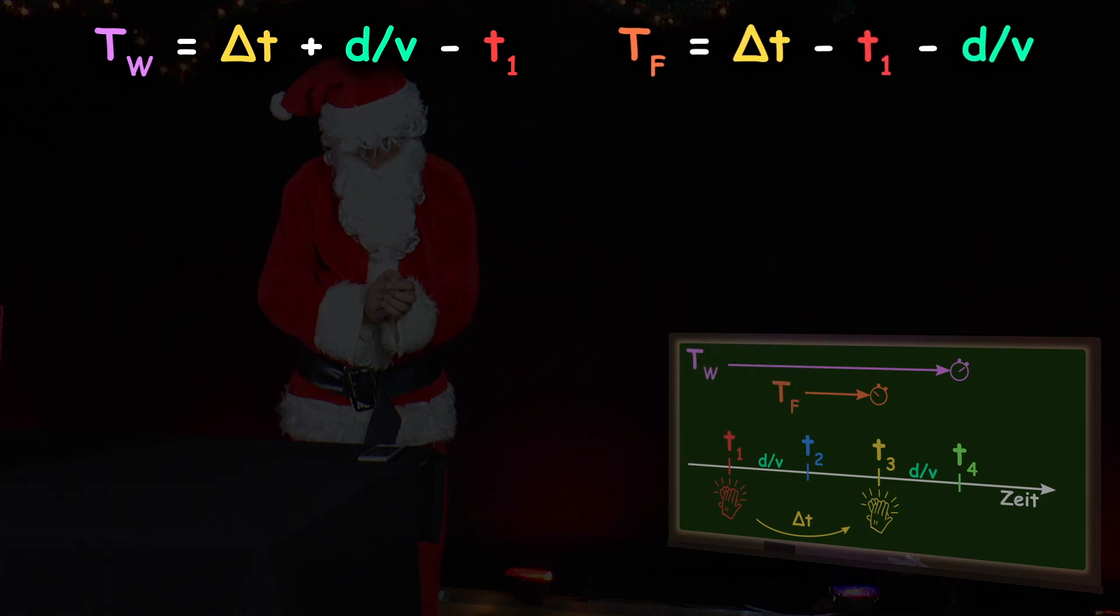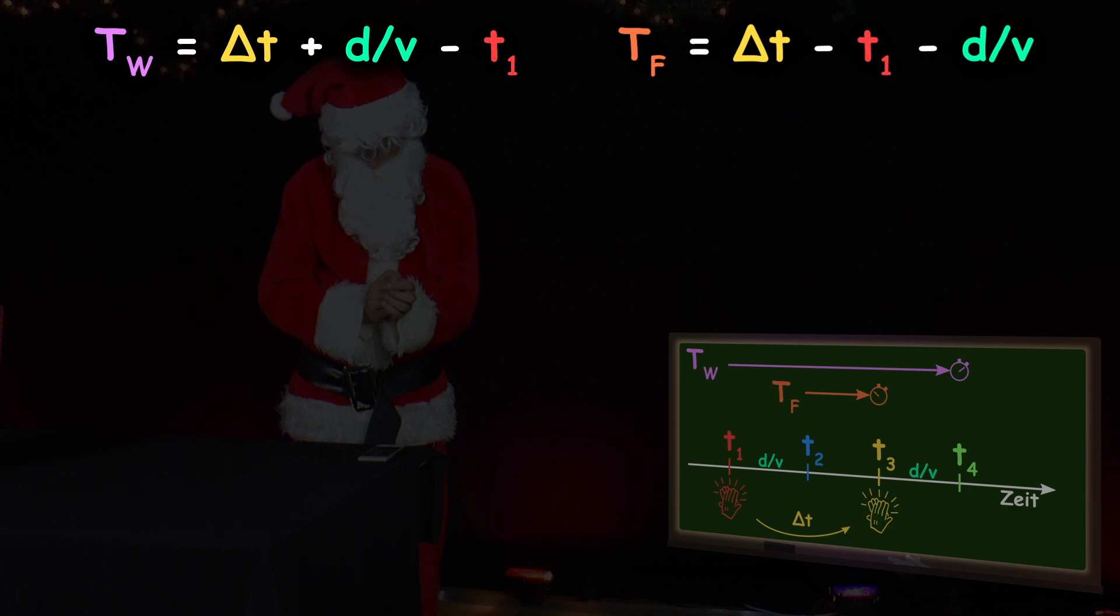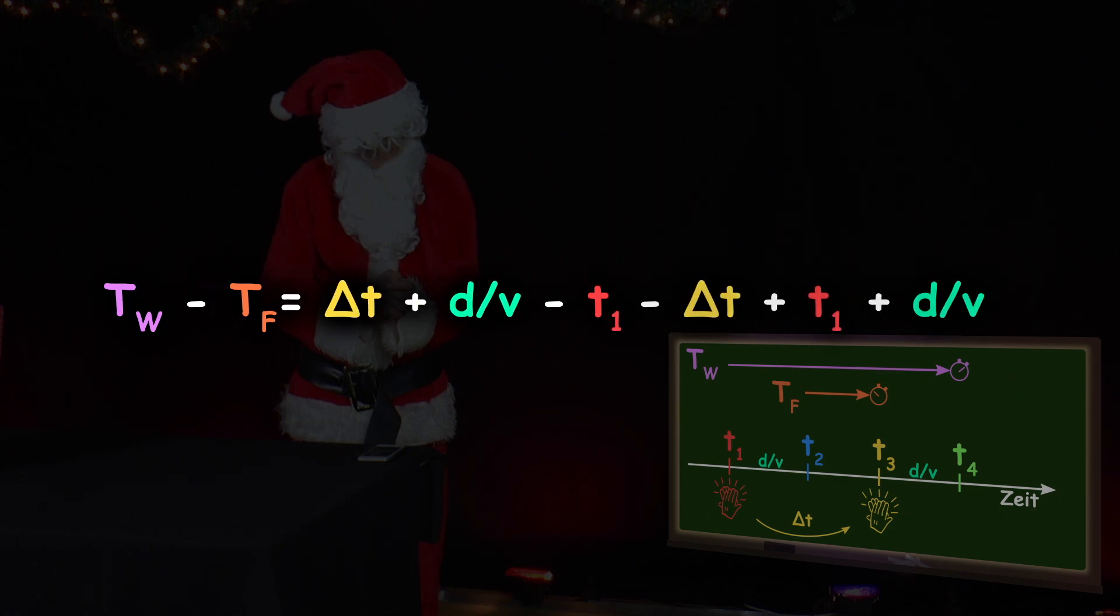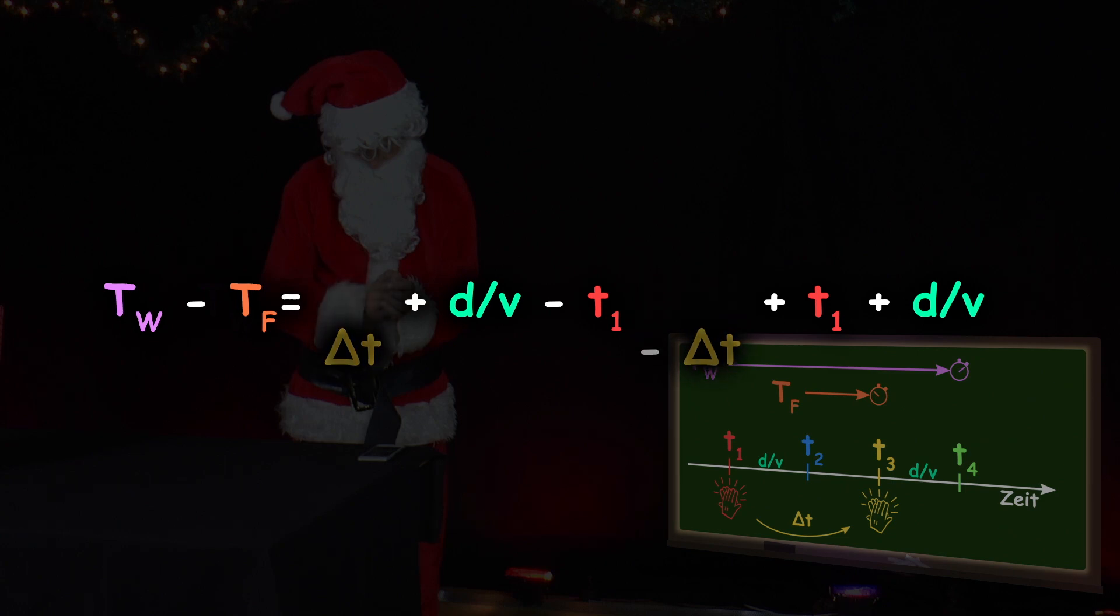The difference between the two measured times is TW minus TF equals delta T plus D divided by V minus T1, minus delta T plus T1 plus D divided by V, equals 2 times D divided by V.